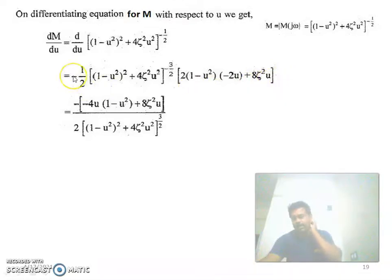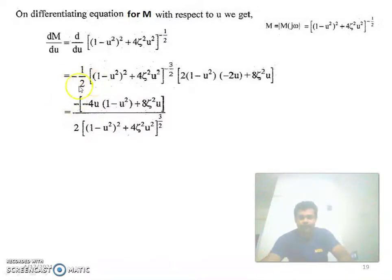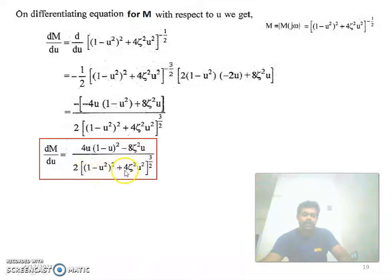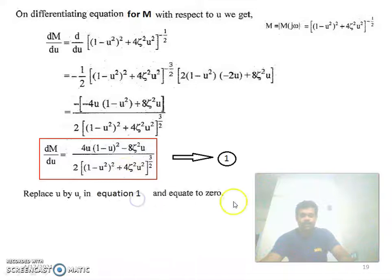Bringing the -3/2 power to the denominator, dM/du = [4u(1 - u²) - 8ζ²u] / [2·((1 - u²)² + 4ζ²u²)^(3/2)]. Taking the negative sign outside and simplifying, this is equation 1.